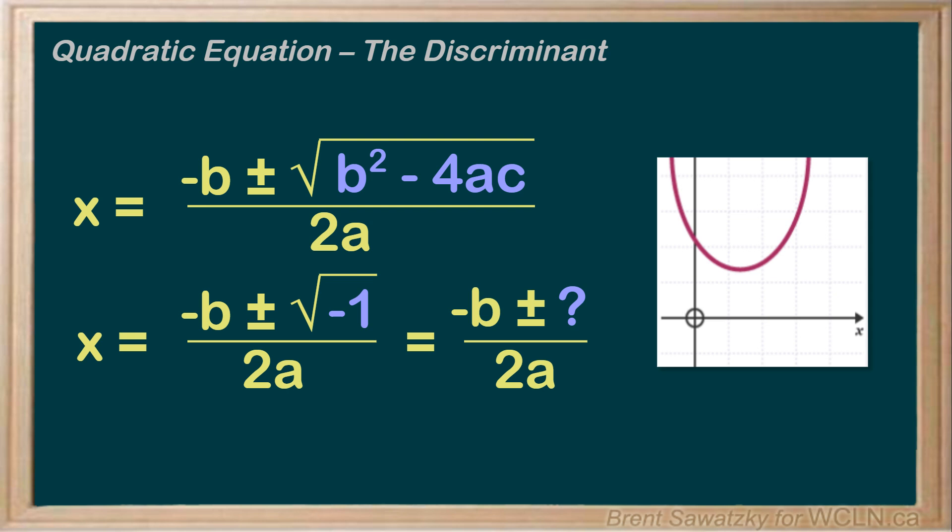So when we talk about the discriminant of a quadratic equation, we're typically interested in a quick calculation of b squared minus 4ac to determine the expected roots. Do we expect two roots, or one root, or no roots?